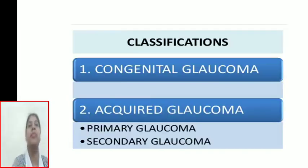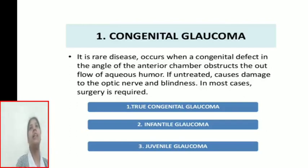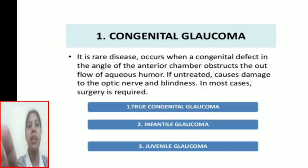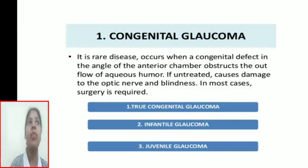Classification. Glaucoma is classified as congenital glaucoma and acquired glaucoma. Acquired glaucoma includes primary glaucoma and secondary glaucoma. Congenital glaucoma is a rare disease that occurs when a congenital defect in the angle of the anterior chamber obstructs the outflow of aqueous humor. If untreated, it causes damage to the optic nerve and blindness. In most cases, surgery is required.